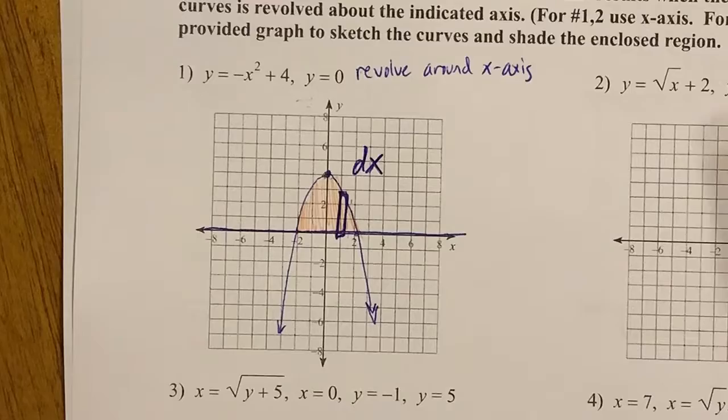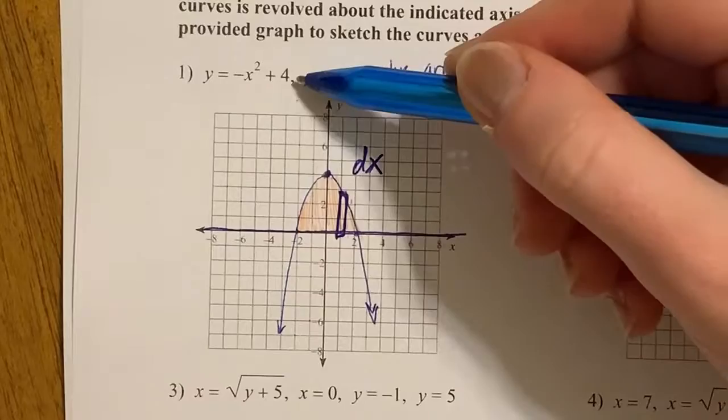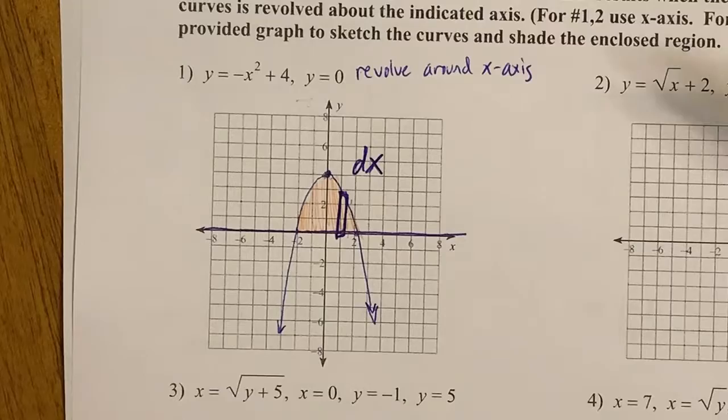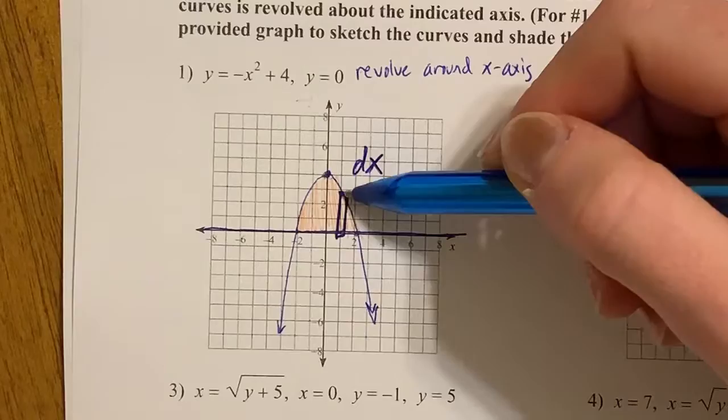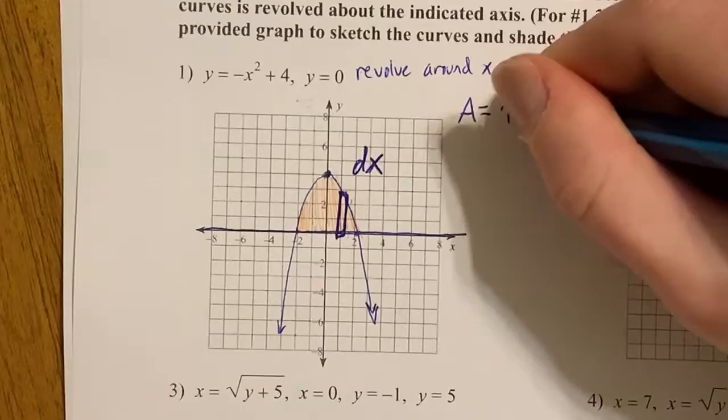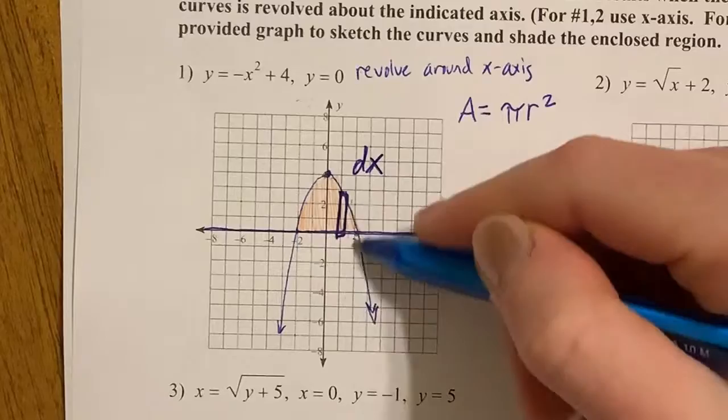So everything needs to be in terms of x. Let me see if my equations are in terms of x, and okay, it is, so I'm good on that. Now what I need to do is I need to figure out the area of that shape, and the slice for a revolving one is going to be a circle. So area is πr². I'm trying to find the area of one of those circle slices.